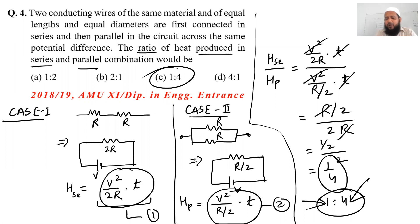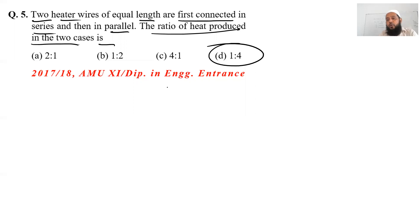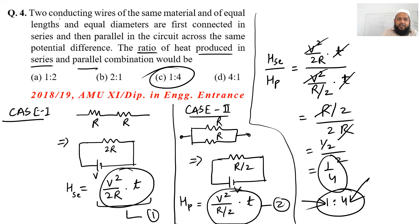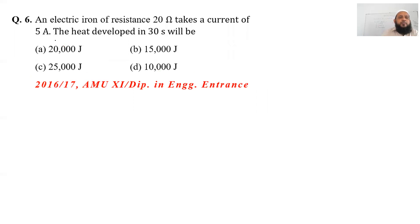Remember this concept — it will be used in the very next problem. Question 5: Two heater wires of equal length are first connected in series and then in parallel. The ratio of heat produced in the two cases will again be 1:4. The language in question 4 and question 5 is different but the concept and the answer are the same.